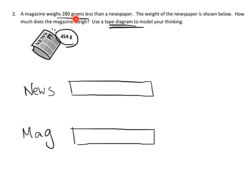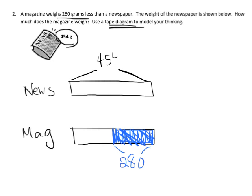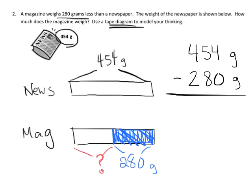Reading the question again: a magazine weighs 280 grams less than a newspaper, so I need to make the magazine bar shorter by 280—I'm crossing off that portion to symbolize it. The weight of the newspaper is 454 grams, so I label that bar 454 grams. The question asks how much the magazine weighs, which is the remaining section of the magazine bar.